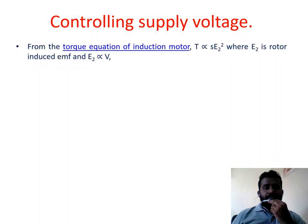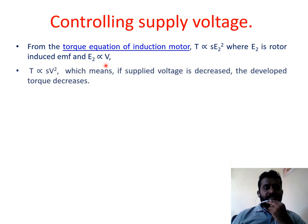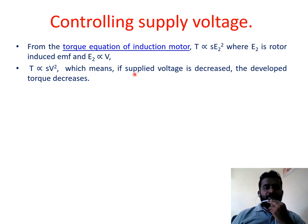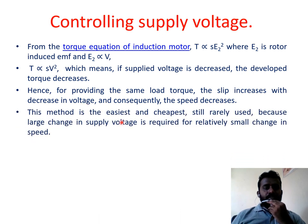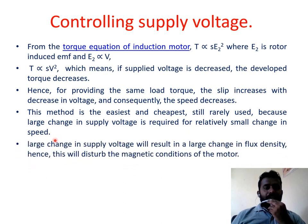Control supply voltage method: from the torque equation, T is proportional to S × E₂², and since E2 is proportional to voltage V, T is proportional to S × V². If supply voltage decreases, torque decreases. To supply the same load torque, slip increases, and consequently speed decreases. This method is the easiest and cheapest, but rarely used because a large change in supply voltage is required for a relatively small change in speed, which disturbs the magnetic conditions of the motor.